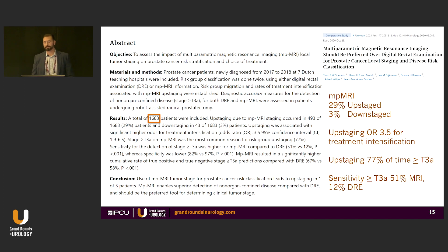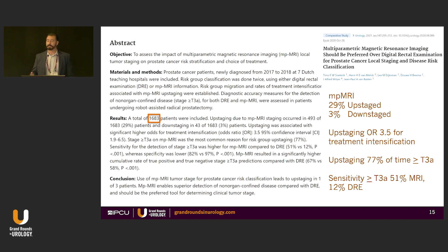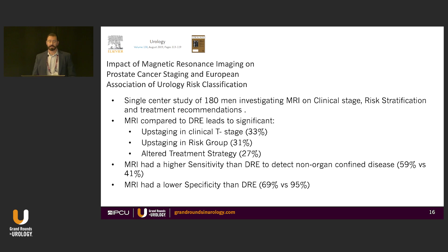Looking at 1,683 men, if you did a multi-parametric MRI, you were upstaged 29 percent of the time and downstaged three percent. The odds ratio — if you were upstaged — led to treatment intensification by 3.5. If upstaged, 77 percent of the time you had T greater than T3A disease, meaning the cancer was past the prostate. A European study of 180 men showed the same story: MRIs upstage clinical T-stage, upstage risk groups, and might alter treatment strategies about a third of the time.